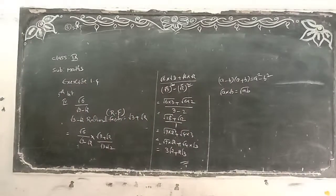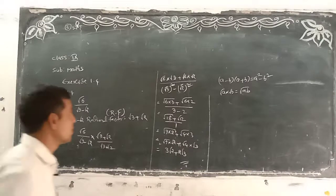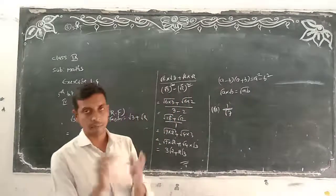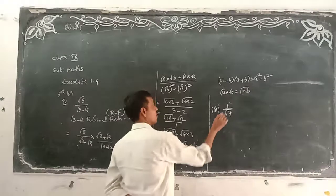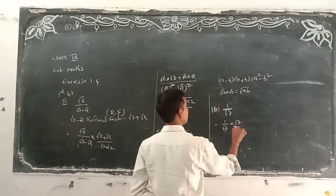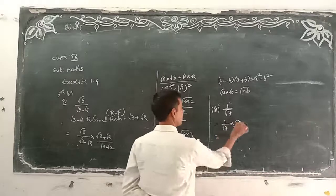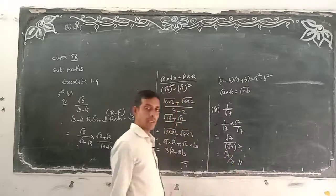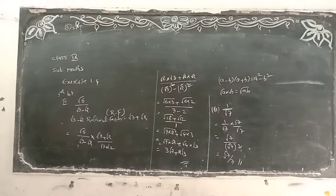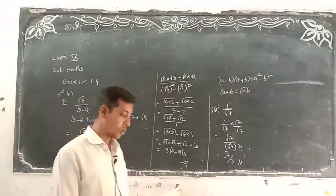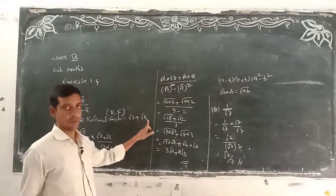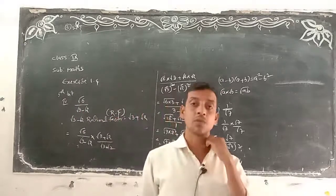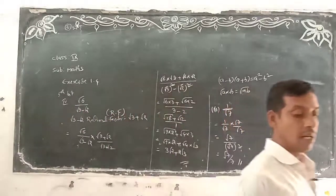Next, the third problem is a different one. In the denominator there is no plus or minus — only one number is there, which is root 7. Simply multiply and divide by root 7: 1 into root 7 over root 7 squared gives root 7 by 7. For the first problem (3 plus root 2), the rationalizing factor is 3 minus root 2. For the second, root 7 minus root 6 — RF is root 7 plus root 6. Multiply and divide to get the answer.